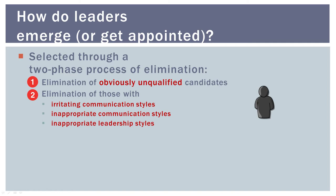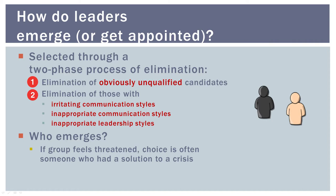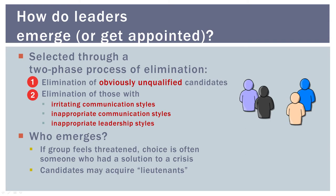Whoever remains after this process becomes the group's leader—assuming there is one clear choice. But what if more than one person survives this elimination process? The group looks more closely at what they need. If the group feels threatened, the group will often choose someone who was successful in providing a solution to a crisis—either for the organization or for some other organization or group. Another determining factor is the influence of lieutenants—not a lieutenant like in the military. A lieutenant here is someone who advocates for a candidate. If only one member gains the support of a lieutenant, that person will probably become the leader. If there are multiple supporters advocating for different candidates, the result may be a power struggle in the group.